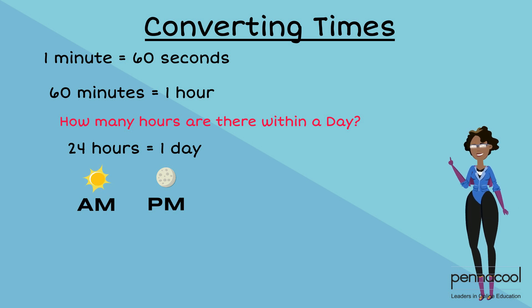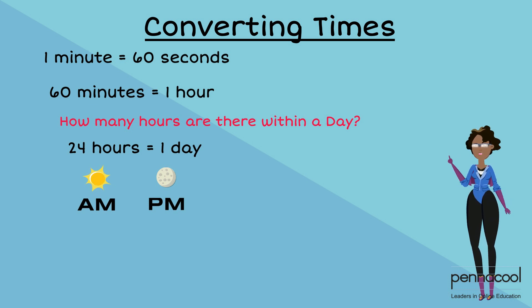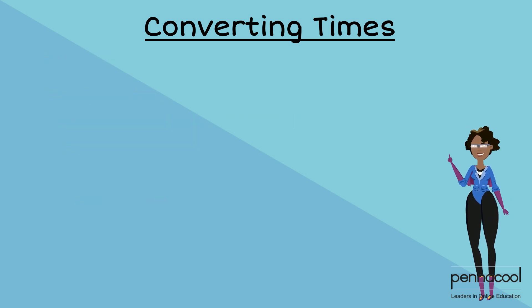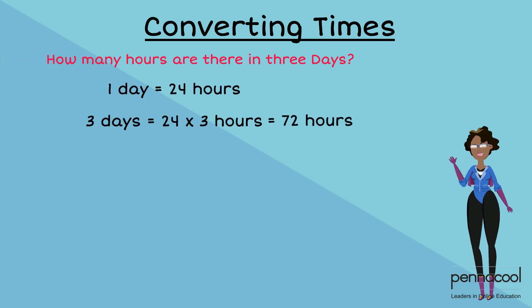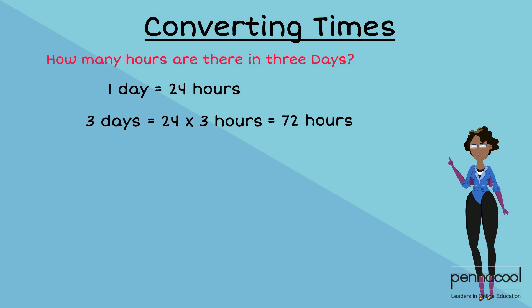Let's look at a few examples. If we've established that there are 60 seconds in one minute, 60 minutes in one hour and 24 hours in one day, our first example would be: how many hours are in three days? Well, if in one day we have 24 hours, in three days we will have 24 multiplied by 3, which gives us 72 hours.